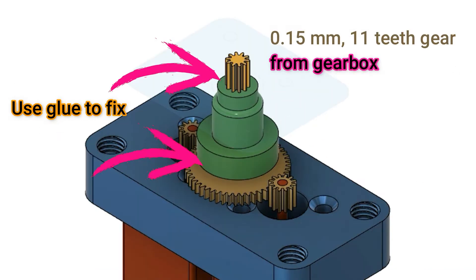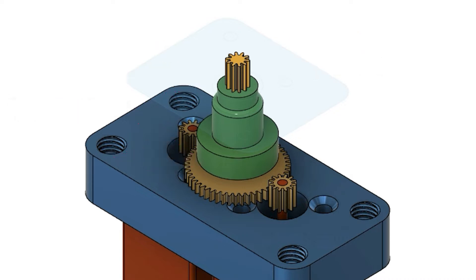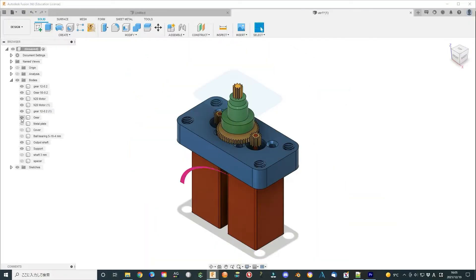I use glue to fix the gear to a 3D printed output shaft. Then this shaft directly connects to a 0.2 mm gear. This shaft will be driven by a square motor.